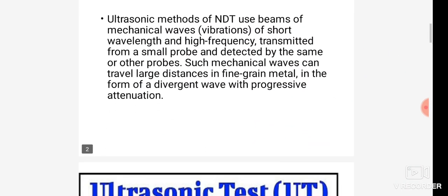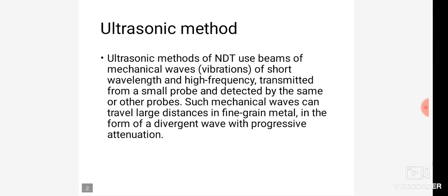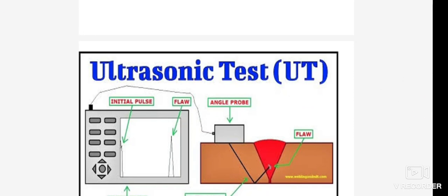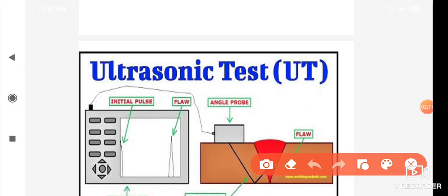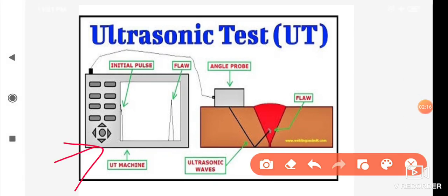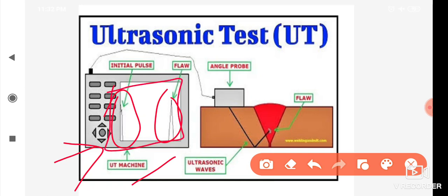Now let's look at the equipment used in the ultrasonic testing method. There is a screen where we cannot see the parts directly with our eyes. This equipment is called the UT machine — ultrasonic testing machine. It displays pulses on screen. The sound waves we send are displayed easily on the screen via pulses.